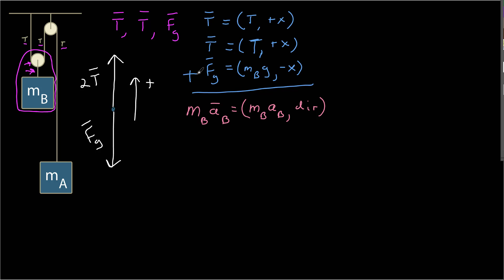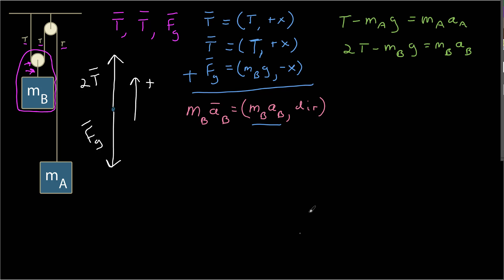The sum of all these forces is equal to the mass of object B times the acceleration of B, which is a vector with magnitude mass B times the magnitude of acceleration B, pointing in a direction I don't know yet. I translate this into a scalar relationship using my one-dimensional vector notation, where the sign indicates the direction of the vector. Adding this to the equation I had before, I now have two equations but still three unknowns.